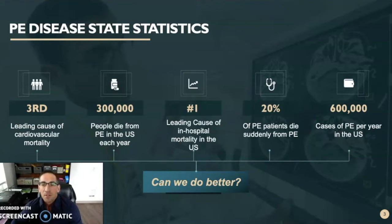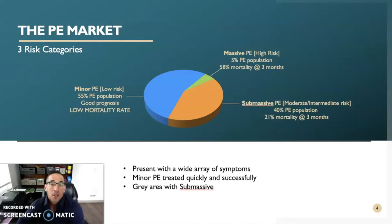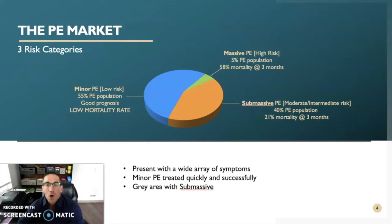Given these startling figures, the question is: can we do better? PE patients can present with a wide array of symptoms, some that even mimic those of a heart attack, which is why it's important that we risk stratify PE patients into three separate categories.